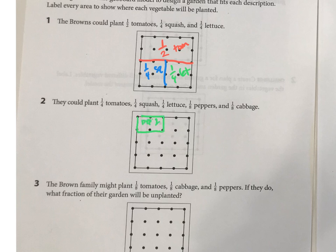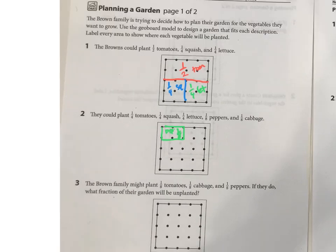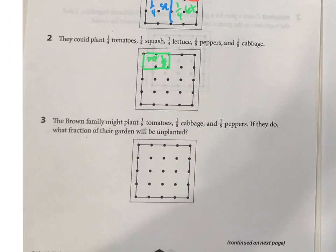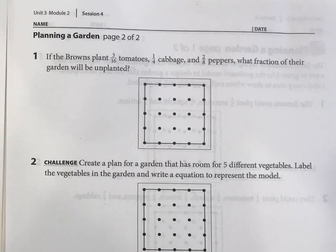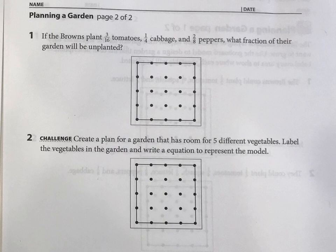And then the rest of it should be easy. And then okay, you've got tomatoes and cabbage and peppers, and then what fraction is unplanted? What fraction is unplanted? Now over here we have some of our first fractions with a numerator of more than one. So three sixteenths tomatoes. So remember, one sixteenth is like one box, so three sixteenths would be like that.